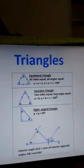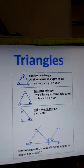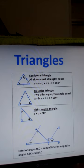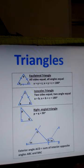Now we are through with angles and can discuss triangles. The first is an equilateral triangle, also called an equiangular triangle, because all three sides are equal and all three angles are equal. In this case each angle is 60 degrees, since the sum of angles in a triangle is always 180 degrees, and 180 divided by 3 equals 60.